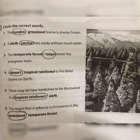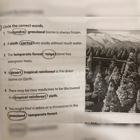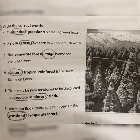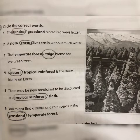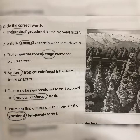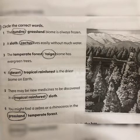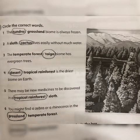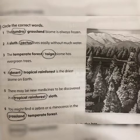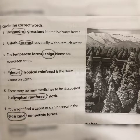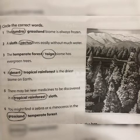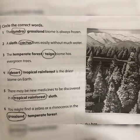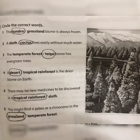Circle cactus in sentence two. Sentence three: the temperate slash taiga biome has evergreen trees. If you remember, the taiga forest biome was full of evergreen trees, so the correct option is taiga. Circle taiga in sentence three. Sentence four: a desert slash tropical rainforest is the driest biome on earth. We all know the desert is the driest biome on earth, so circle desert in sentence four.